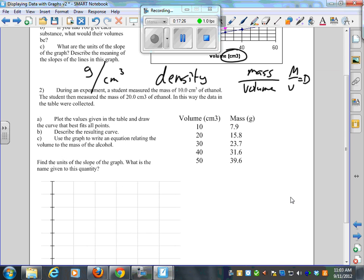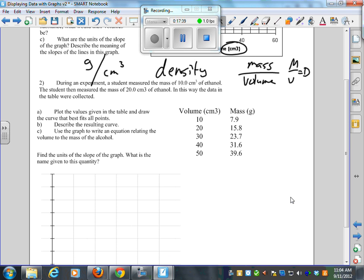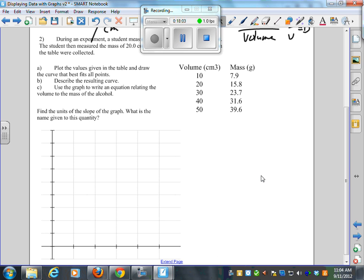Let's look at number 2. How many people have completed at least two-thirds of number 2? Hands up. Completed about half to two-thirds of number 2. So let's go over number 2, and then maybe that'll give you a chance to finish up number 2. So during an experiment, a student measured the mass of 10 cubic centimeters of ethanol. The student then measured the mass of 20 cubic centimeters of ethanol. And the data in the table looks like this. So 10, 20, 30, 40, 50. Plot the values given in the table and draw the curve that best fits all points. Describe the resulting curve and use the graph. Write an equation relating the volume to the mass of the alcohol. Find the units of the slope of the graph, and what is the name given to the slope?